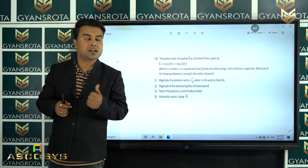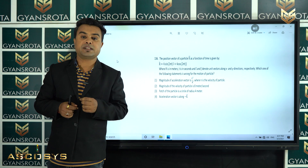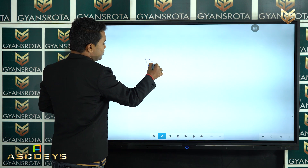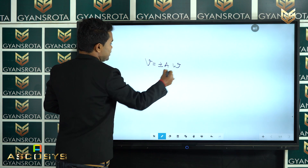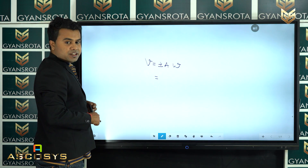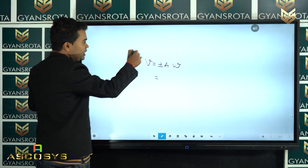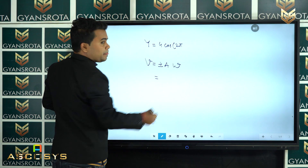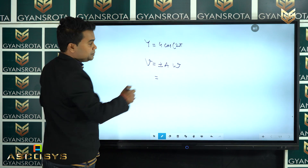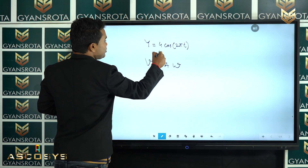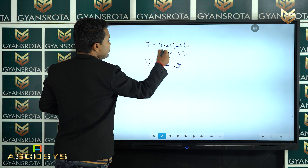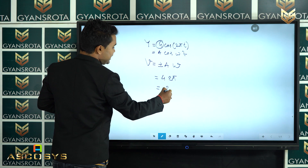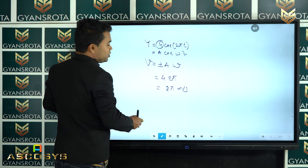We are going to solve this with the help of Simple Harmonic Motion from class 11. We know V = ±Aω. Along the y direction, y = 4cos(2πT). Comparing with A cos(ωt), A = 4 and ω = 2π. So velocity comes out to be 8π meters per second.